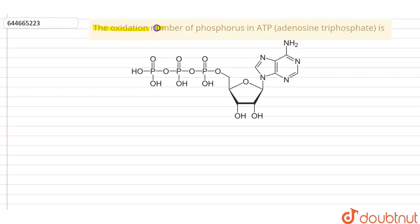The question is: the oxidation number of phosphorus in ATP, that is adenosine triphosphate. So let's see the answer.